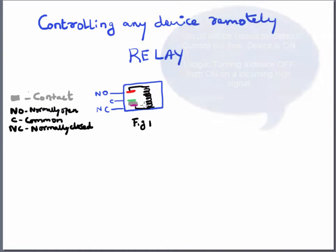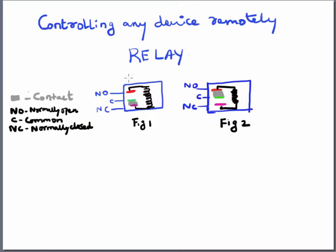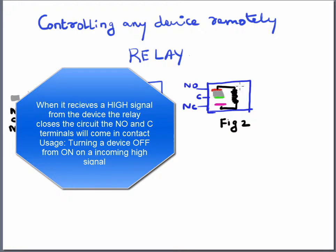The normally open plate is by default not connected with the common plate. If you see figure 2, we are energizing the coil. What happens is the normally open plate is now connected to the common plate. So even in this case, the current would flow and the circuit would be completed. For this, the coil has to be energized. This is the basic structure of a relay.